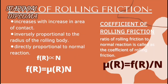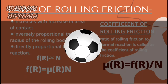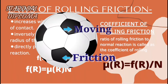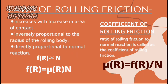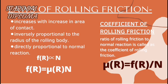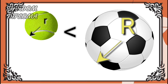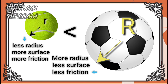Coming to the last one — the laws of rolling friction. Rolling friction is a friction that acts when one body is rolling on a surface. The first law is the common one: it always acts in the opposite direction to which the body is moving. The second law is that it increases with an increase in the area of contact. The third law is that it is inversely proportional to the radius of the rolling body. As the radius of the body increases, the rolling friction decreases, and vice versa.